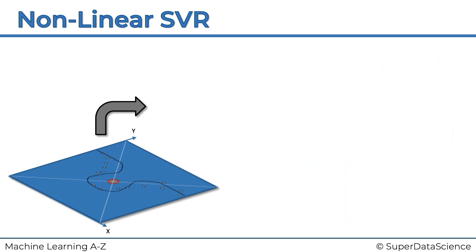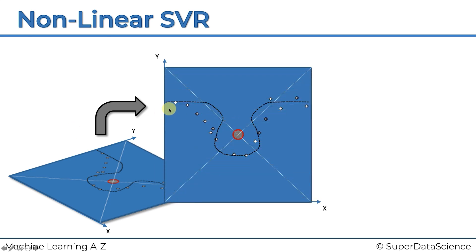So that's our intersect line projected on the two-dimensional plot, and that effectively is our model. So if we now look at it in the perspective that we started with, you'll see that that is what it looks like. That's the nonlinear SVR.